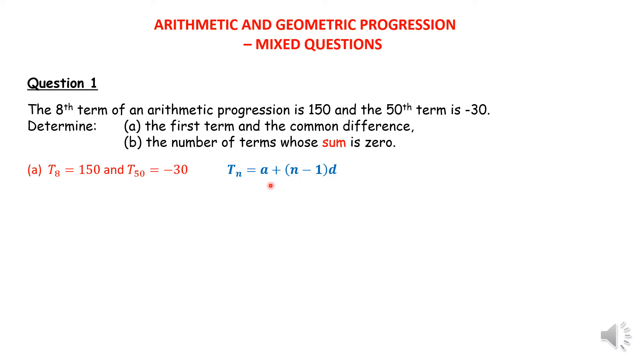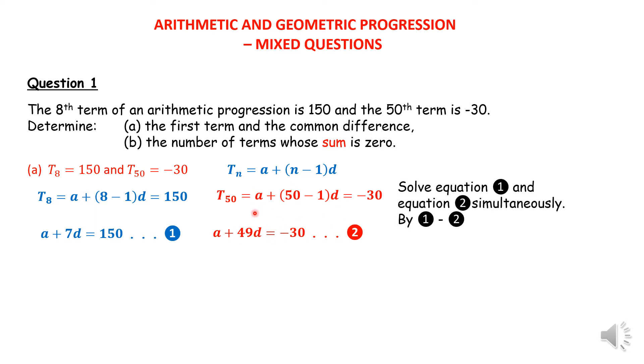We have the 8th term is 150 and the 50th term is negative 30. Using the formula T sub n for an arithmetic progression, the 8th term gives us a plus 7d equals 150, and the 50th term gives us a plus 49d equals negative 30. These are equations 1 and 2.